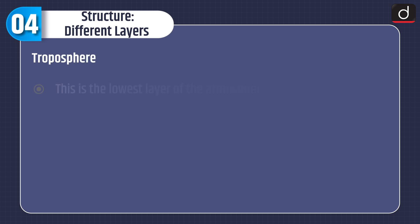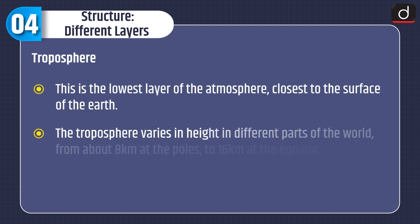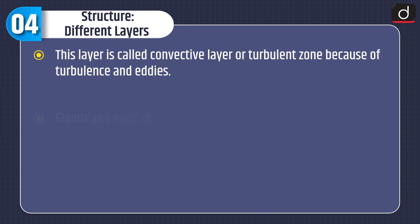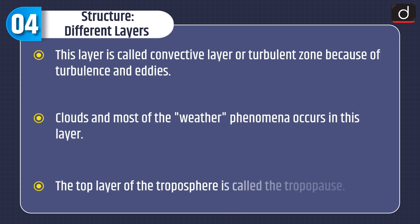First is the troposphere. This is the lowest layer of the atmosphere, closest to the surface of the earth. The troposphere varies in height in different parts of the world, from about 8 km at the poles to 16 km at the equator. Within the troposphere, the temperature drops rapidly the higher you go. This layer is called the convective layer or turbulent zone because of turbulence and eddies. Clouds and most of the weather phenomena occur in this layer. The top layer of the troposphere is called the tropopause.